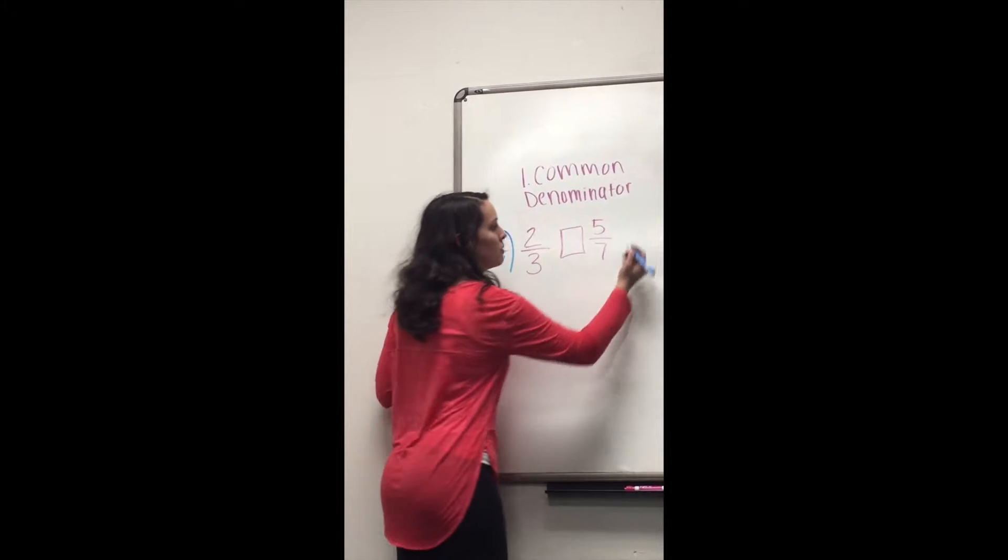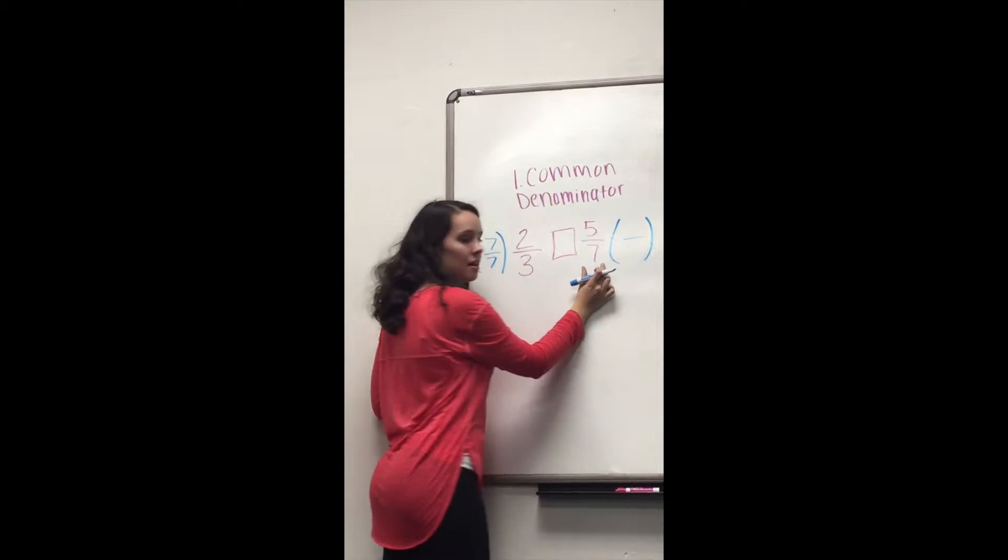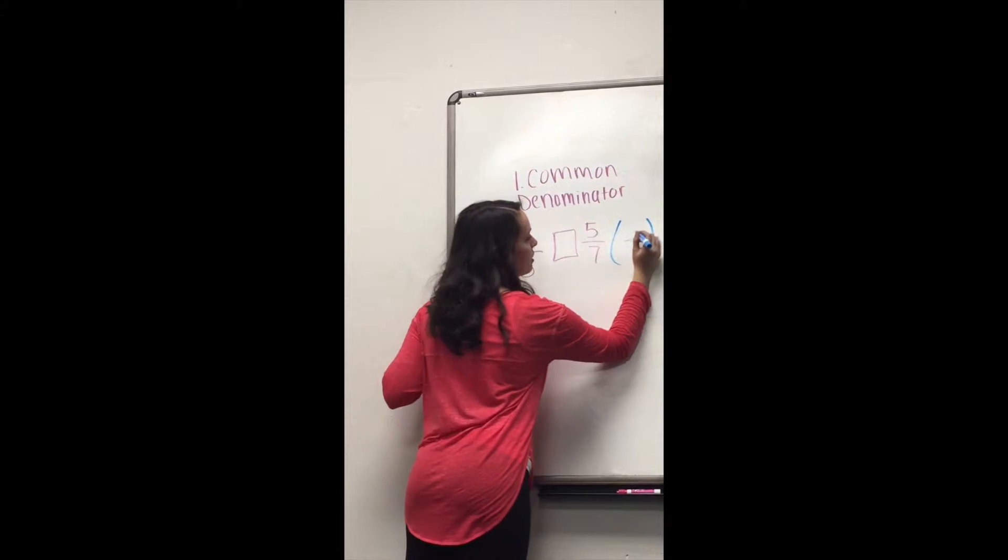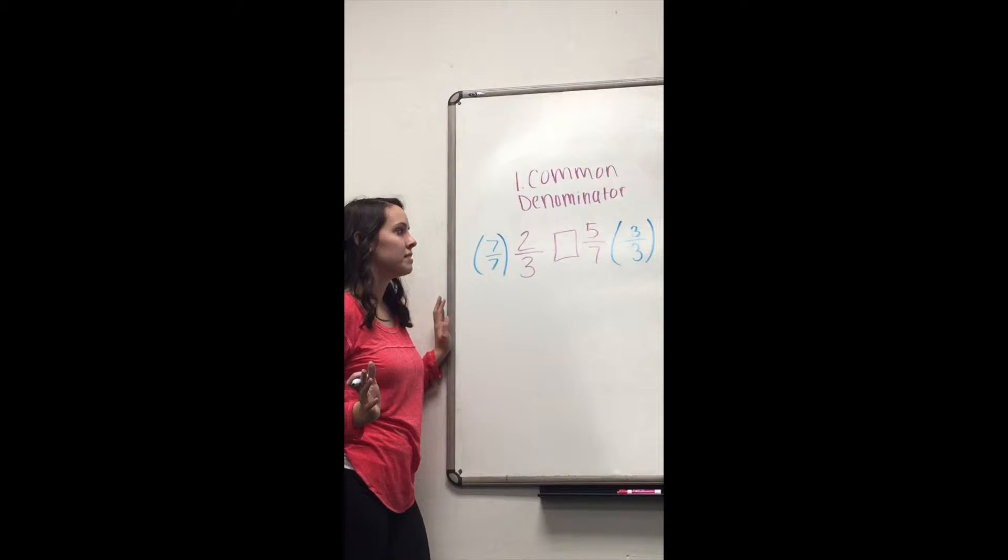And then over here, we need to find something that we can multiply by to get the denominator to be 21 on this side. And in our case, that would be 3 over 3. And again, we do this because 3 over 3 equals 1, and that does not change the value of 5 sevenths.